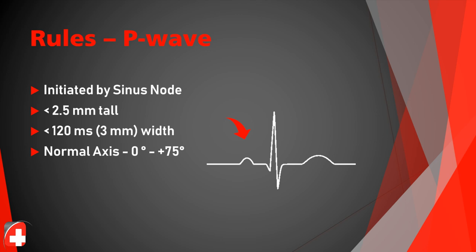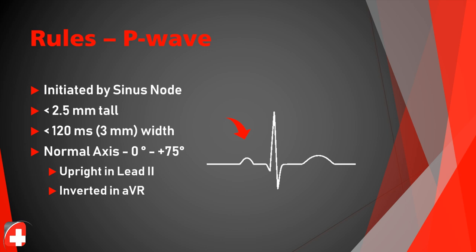It should always appear upright in lead 2 on a normal EKG, and inverted in AVR. If you see an upright P wave in AVR, that's a good indicator of possible lead reversal — double-check that all limb leads are in the right places. Non-sinus P waves are called P' waves.